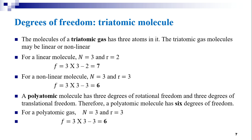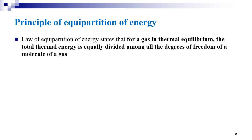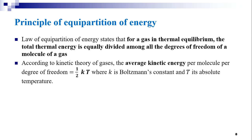Next, we shall discuss the principle of equipartition of energy. The law of equipartition of energy states that for a gas in thermal equilibrium, the total thermal energy is equally divided among all the degrees of freedom of a molecule. According to kinetic theory of gases, for a system in equilibrium, the average kinetic energy per molecule per degree of freedom is equal to ½kT, where k is the Boltzmann constant and T is the absolute temperature.